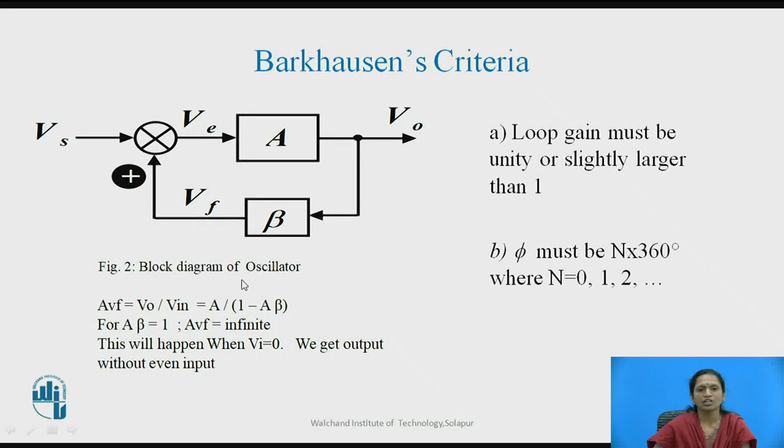This negative sign is there due to the positive feedback applied in the circuit. So the gain with feedback equals output voltage by input voltage, which can be represented as A by 1 minus A*beta.